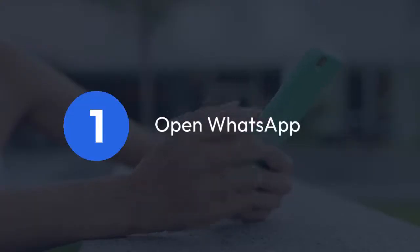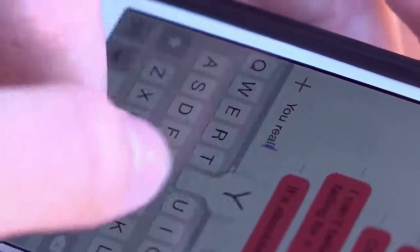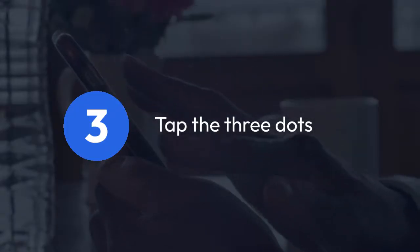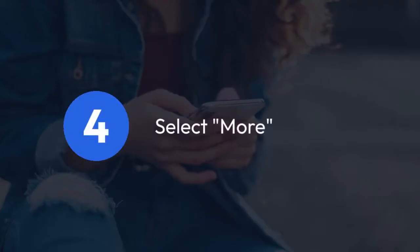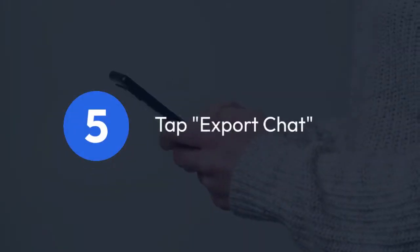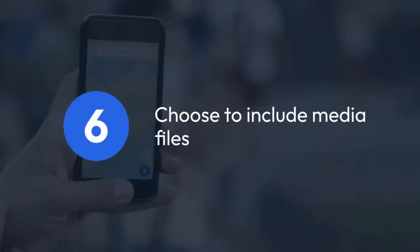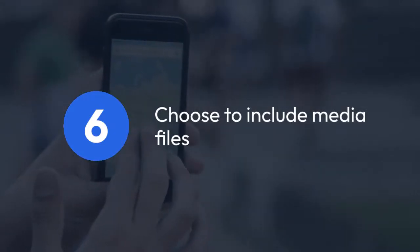1. Open WhatsApp on your phone. 2. Go to the chat you want to forward messages from. 3. Tap on the three dots in the top right corner of the screen. 4. Select More from the menu that appears. 5. Tap on Export Chat from the options. 6. Choose whether you want to include media files or not.